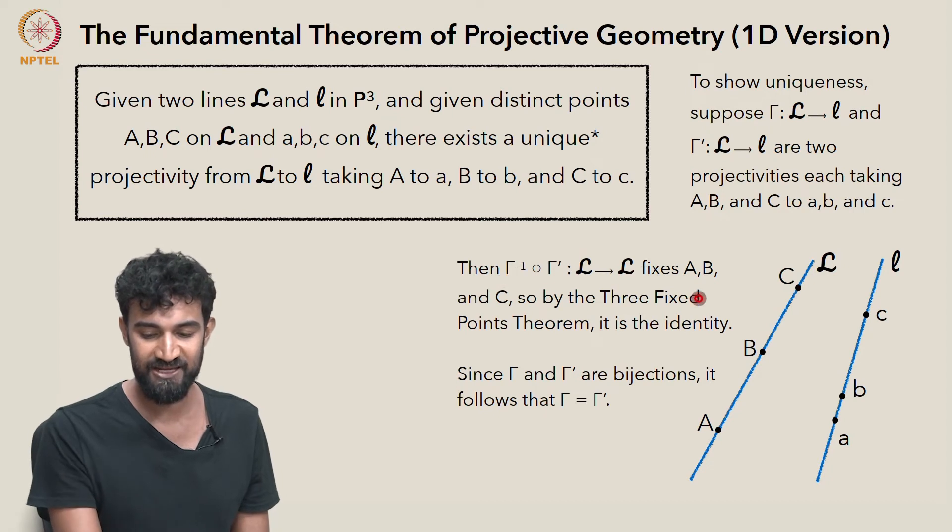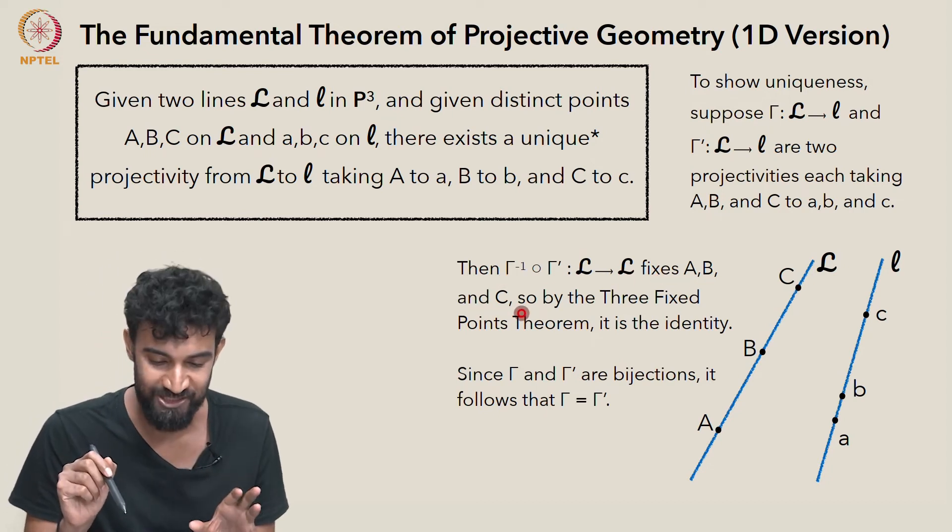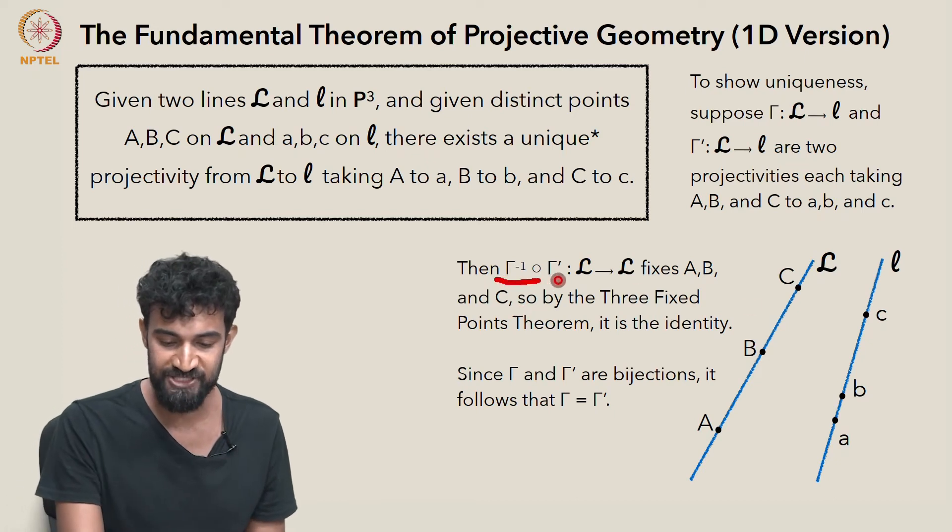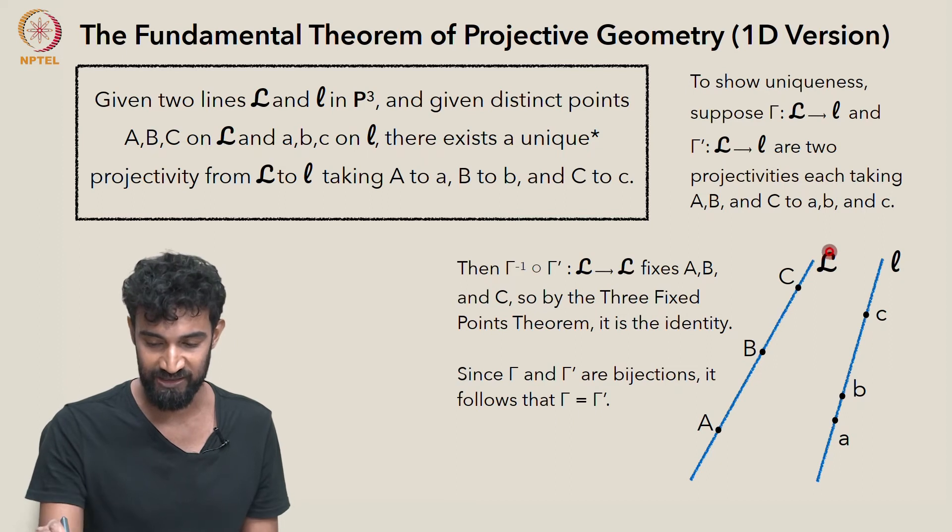So this composition is going to fix A, B, and C. So by the three fixed points theorem, this composition map is the identity map. It's going to fix every single point on capital L.